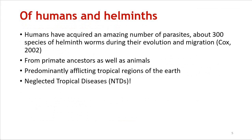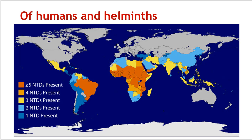So why are humans involved with helminths and how did this come about? It looks as if we acquired worms a very long time ago during our evolution and migration, as reviewed by Cox in 2002. We acquired them probably from primate ancestors as well as from animals — the parasites were already there and simply moved to a new host and colonized them. They predominantly affect tropical regions, and as you are aware, these are also countries that are socioeconomically challenged. They are called neglected tropical diseases, and not much funding is available to eliminate them because they are not lethal — they are subclinical — but they are a tremendous loss to the economy.